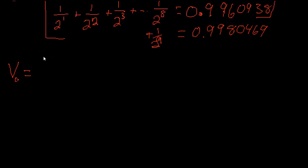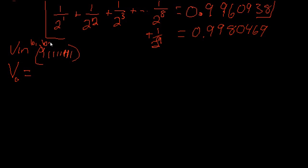We're going to go back to the extreme. Say our binary word is 1, 2, 3, 4, 5, 6, 7. That kind of looks like a pie, doesn't it? So, that's our binary word — that's our V in. We're going to say that this is B1, our first bit. This is B2, and so on and so forth: B3, B4, B5, B6, B7, B8.